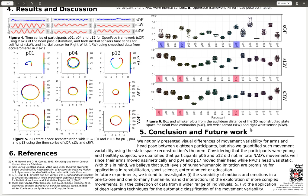To conclude, we not only presented visual differences of movement variability for arms and head pose between 18 participants, but also we quantified such movement variability using the state space reconstruction theorem. Considering that the participants were young and healthy subjects, we found that we can quantify that participants 6 and 12 did not imitate Nao's movements well, since their arms moved asymmetrically. And participants 4 and 17 moved their head while Nao's head was static. With this in mind, we believe that such levels of humanoid imitation are promising for applications in rehabilitation, sports science, entertainment, or education.